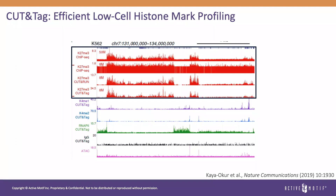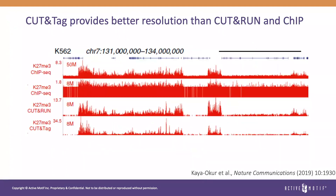Now let's focus on the head-to-head comparison between these three methods. These in-situ techniques, Cut-and-Run and Cut-and-Tag, report the same peaks as CHIP-seq, showing that they are valid chromatin mapping methods. Looking at the Cut-and-Tag track at the bottom, we see less background than in the 50 million read depth CHIP-seq reaction, and even slightly better resolution than the Cut-and-Run reaction. For these reasons, Cut-and-Tag represents an improvement on previously existing chromatin analysis methods.